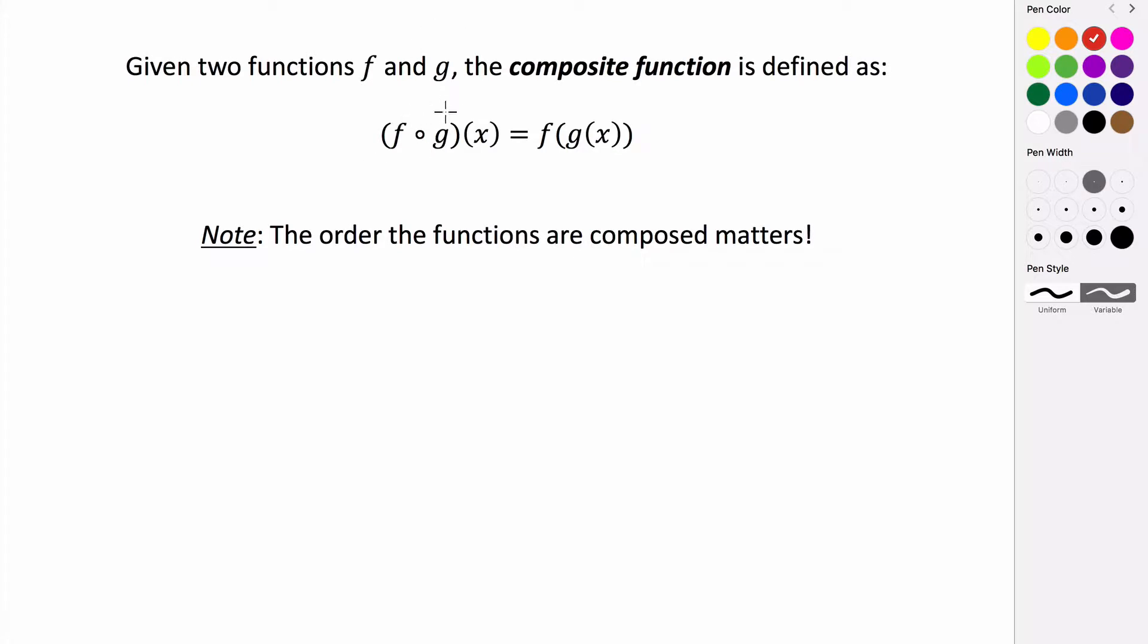So the way that we read this, this symbol means that we're composing two functions. The way that we read this is f composed with g of x is equal to f of g of x. Really we can actually just read this as f of g of x, the same way that we would read this, but what this really means is that f and g are being composed. It's a composition function.